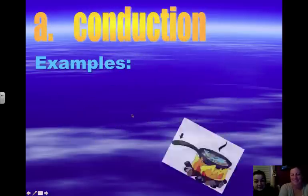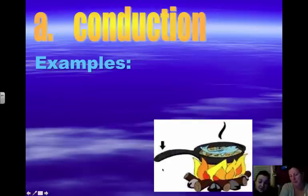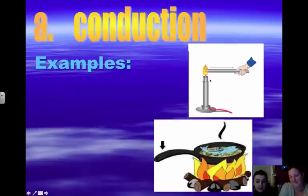Some examples of conduction. The pan. Obviously if the pan has a metal handle, what's going to happen is that the heat is going to be conducted and then transferred through the metal up into the handle. Another thing is here is the flame. If you're holding a metal bar, the heat is going to be transferred this way to the person's hand. Hopefully you put on an oven mitt at that point.